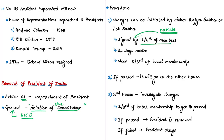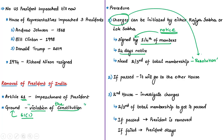The impeachment process starts with a notice in writing that has to be signed by at least one-fourth of the total number of members of a particular House initiating the process. This notice should have the intention to move a resolution for the impeachment of the president. Once the notice has been given, after a period of 14 days, a resolution to impeach the president can be moved in that House, containing the proposal to prefer charges against the president.